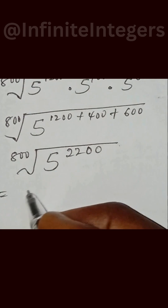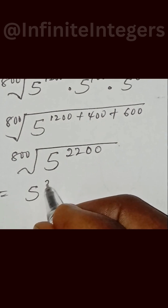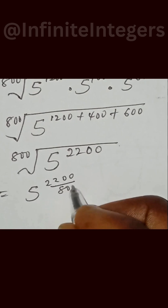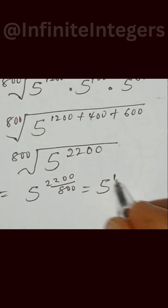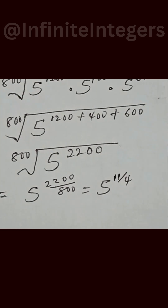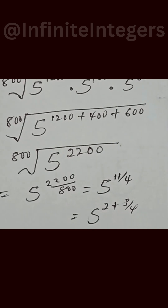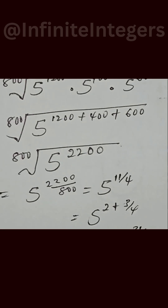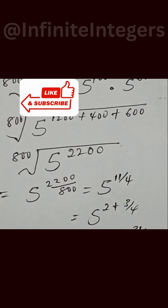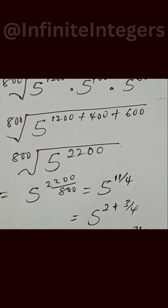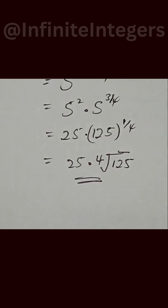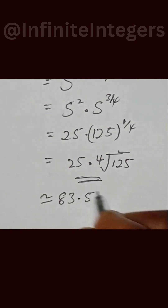This can be written as 5 to the power of 2200 over 800, which simplifies to 5 to the power of 11 over 4. This is rewritten as 5 to the power of 2 plus 3 over 4, which equals 5 squared multiplied by 5 to the power of 3 over 4. That gives us 25 multiplied by 125 to the power of 1 over 4, which equals 25 times the 4th root of 125, approximately equal to 83.5925.